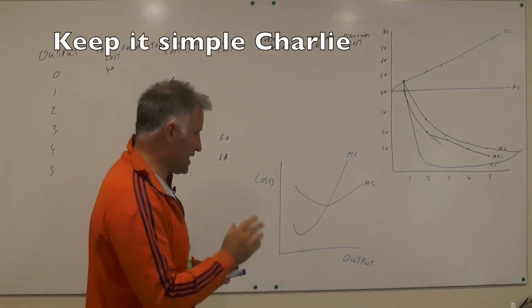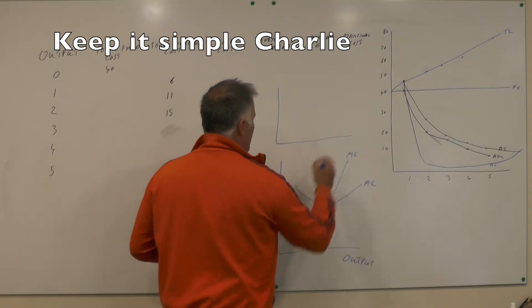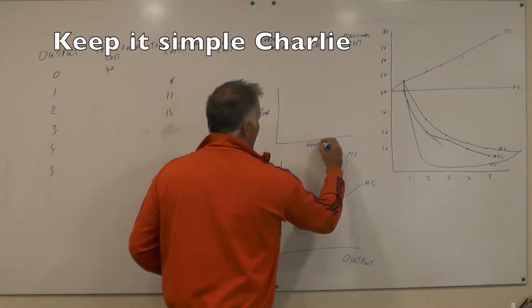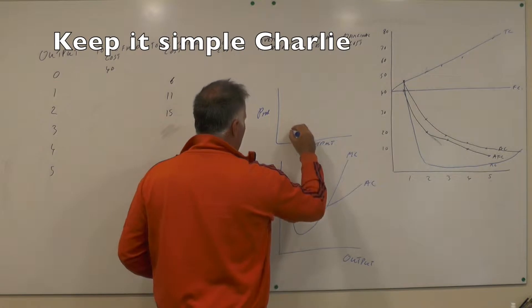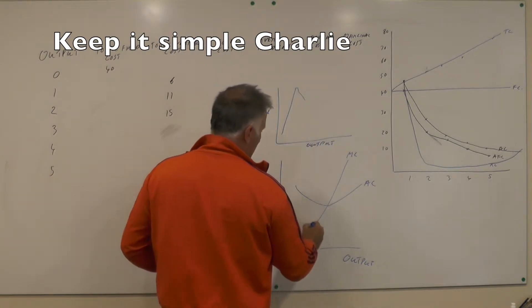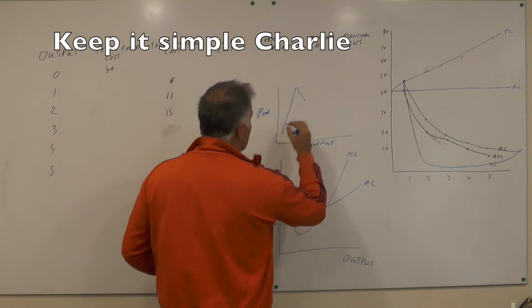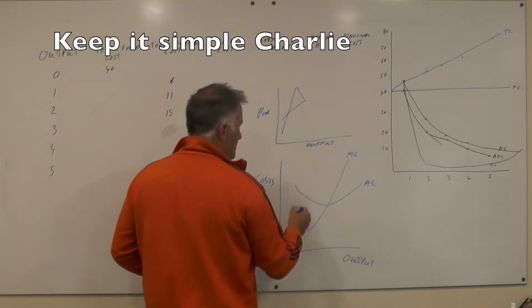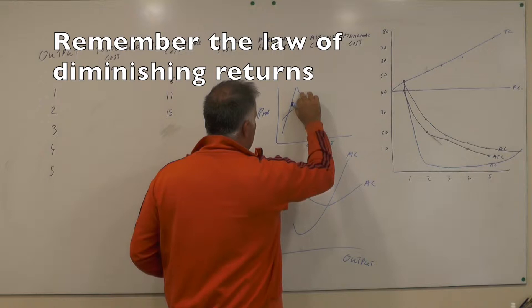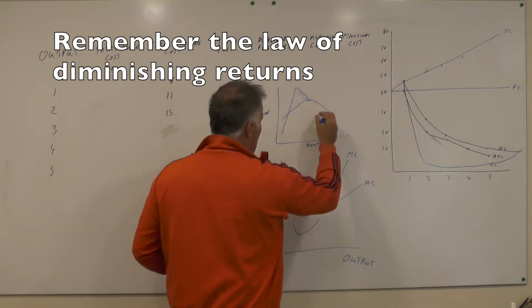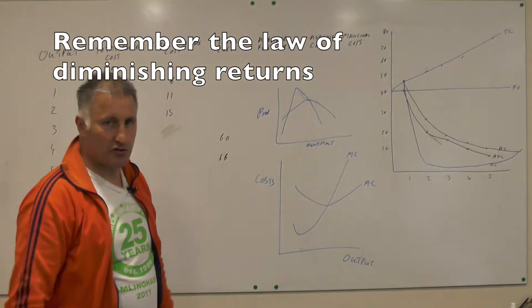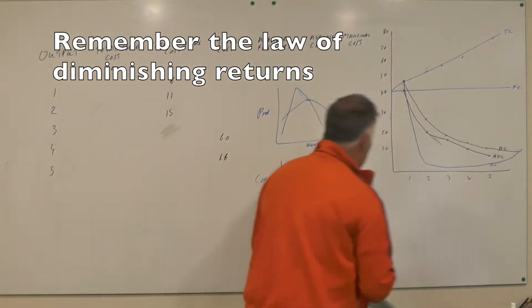What we've just learned is that if I were to draw the product lines above this — so this is product here, and this is output along here — when the marginal product is increasing, the marginal cost curve is falling, and as that starts to fall, the marginal cost curve will start to rise. The average product curve will go like this, and as the average cost curve starts to rise, the average product curve will start to fall. So we have that relationship between the law of diminishing returns and the cost curves — students get that wrong all the time.